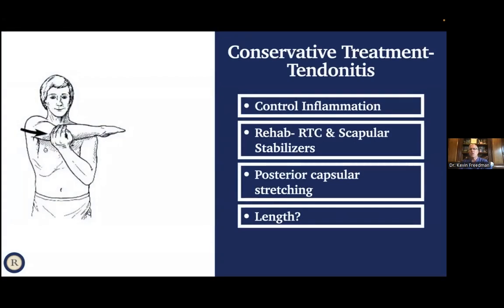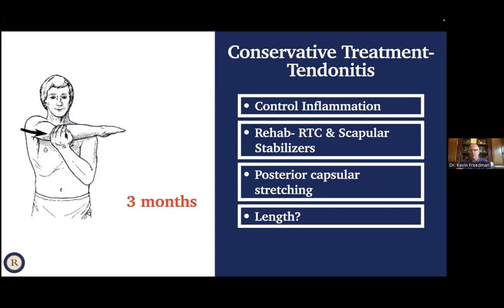The goals of conservative treatment, particularly for tendonitis, are to control inflammation and do a rehab program for rotator cuff strengthening and scapular stabilizers — the muscles around the shoulder blade. We work on stretching, particularly the posterior capsule. How long do we do this? We used to require nine months, then six, then three. The overwhelming majority of patients with inflammation, impingement, or tendonitis — not a rotator cuff tear — can get better with conservative care.